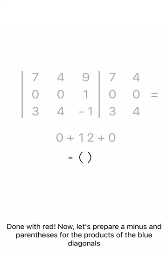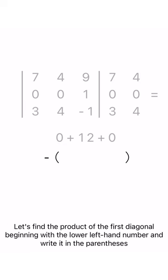Let's find the product of the first diagonal, beginning with the lower left-hand number, and write it in the parentheses.